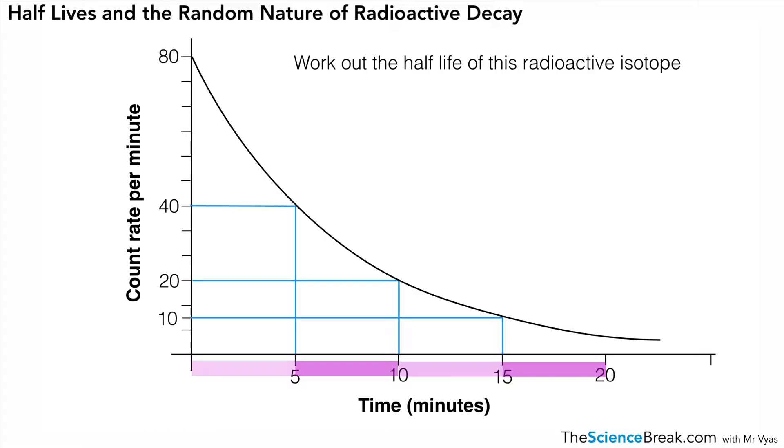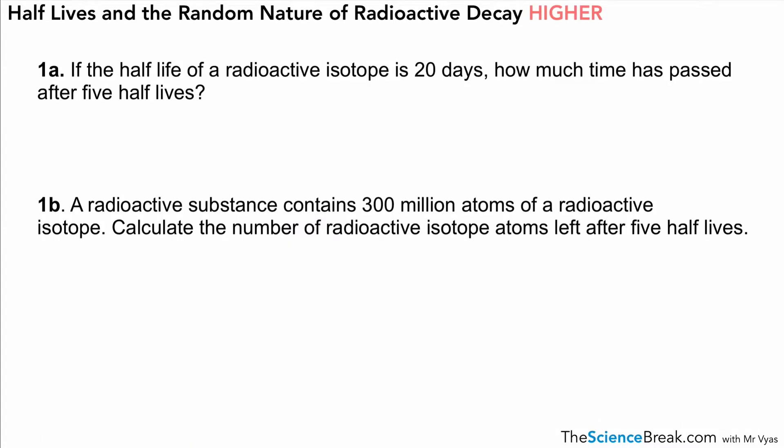Now for the higher tier, we have to be able to do some calculations. Here's an example: If the half-life of a radioactive isotope is 20 days, how much time has passed after five half-lives? We know one half-life is 20 days. If there are five half-lives that have passed, it's just a simple case of five times 20, which is 100 days.